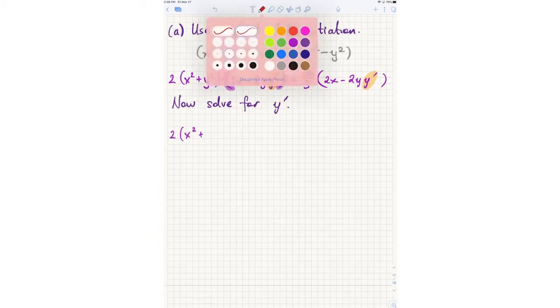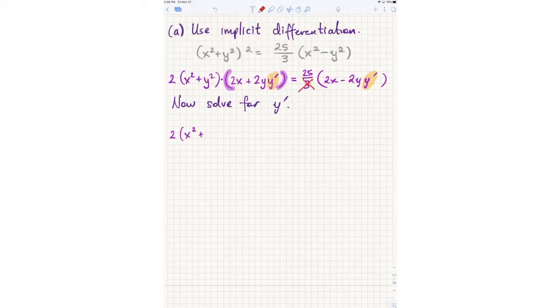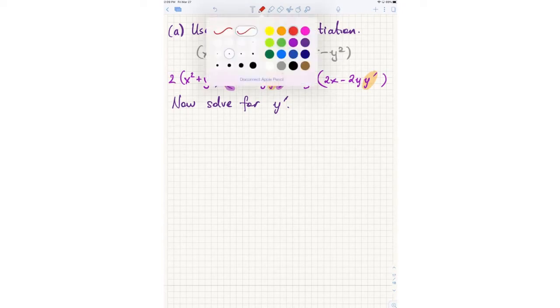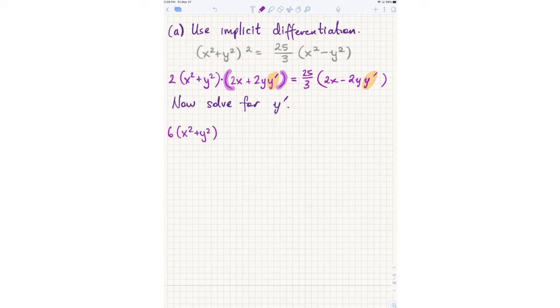Starting from this equation, keep in mind, what are we solving for? We're solving for y', which appears in two places. I have to somehow isolate that. First of all, I'm going to cancel out a factor of 2 on both sides, just to make my life a little bit easier. And then, at the same time, I'm going to multiply both sides by 3.